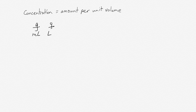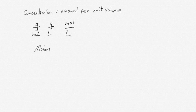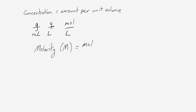So you could write something like grams per milliliter, or grams per liter, or moles per liter, or anything like that. Typically what we use is something called molarity, which is given the units of capital M, and is expressed in units of moles per liter.